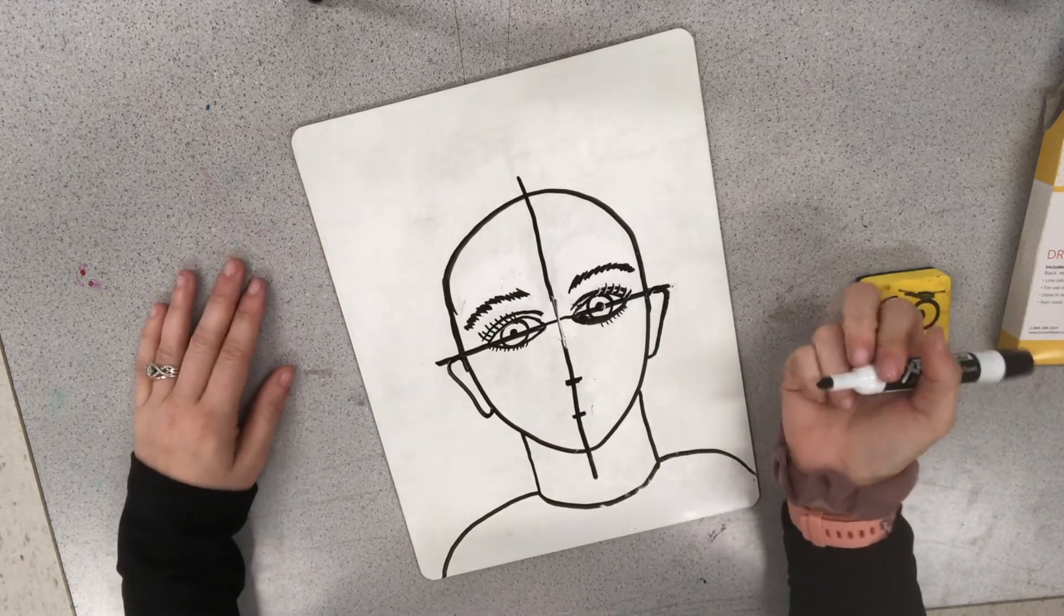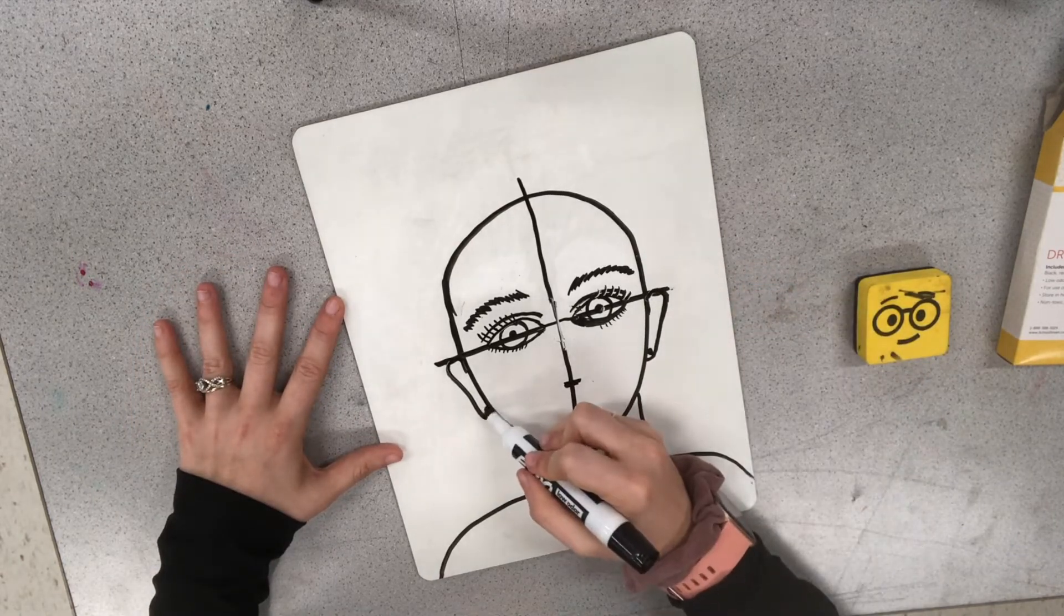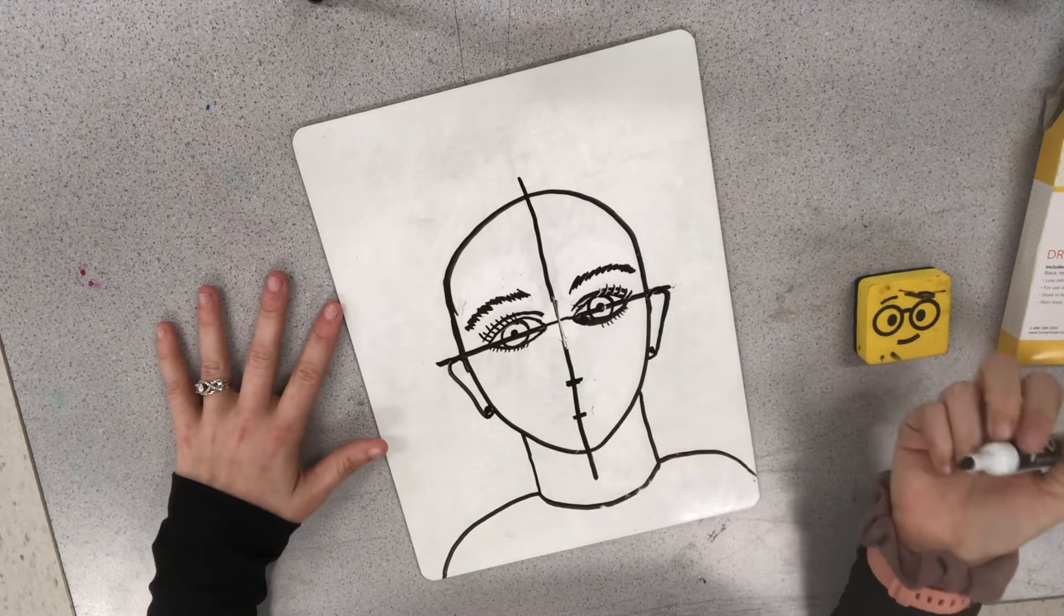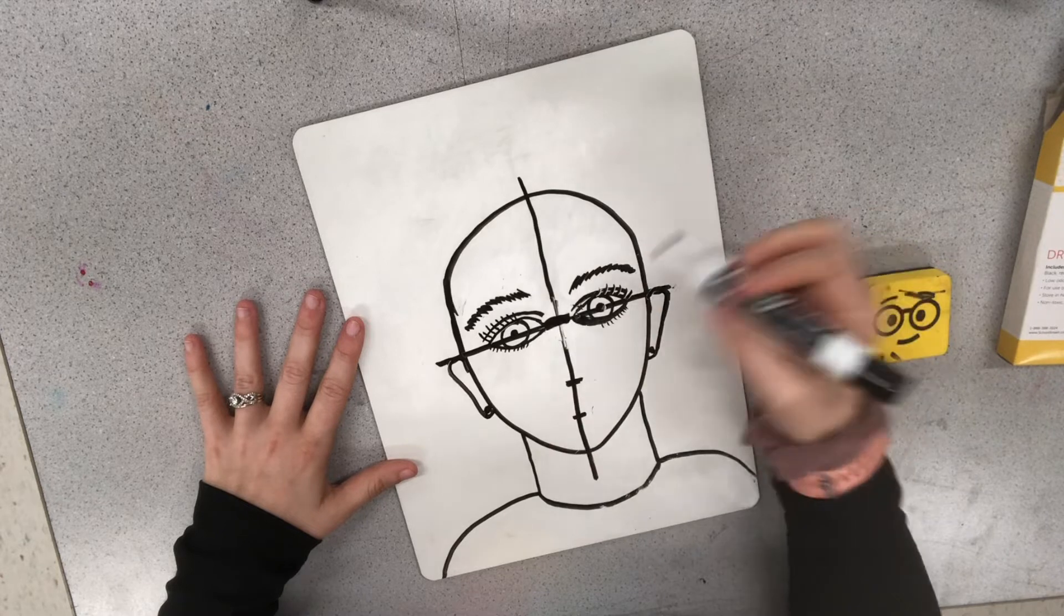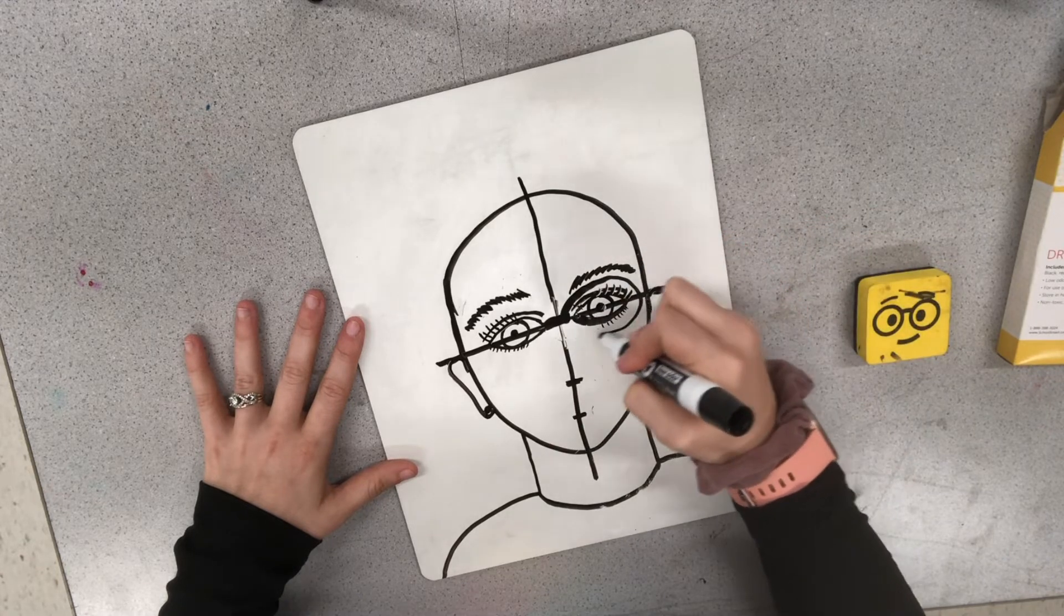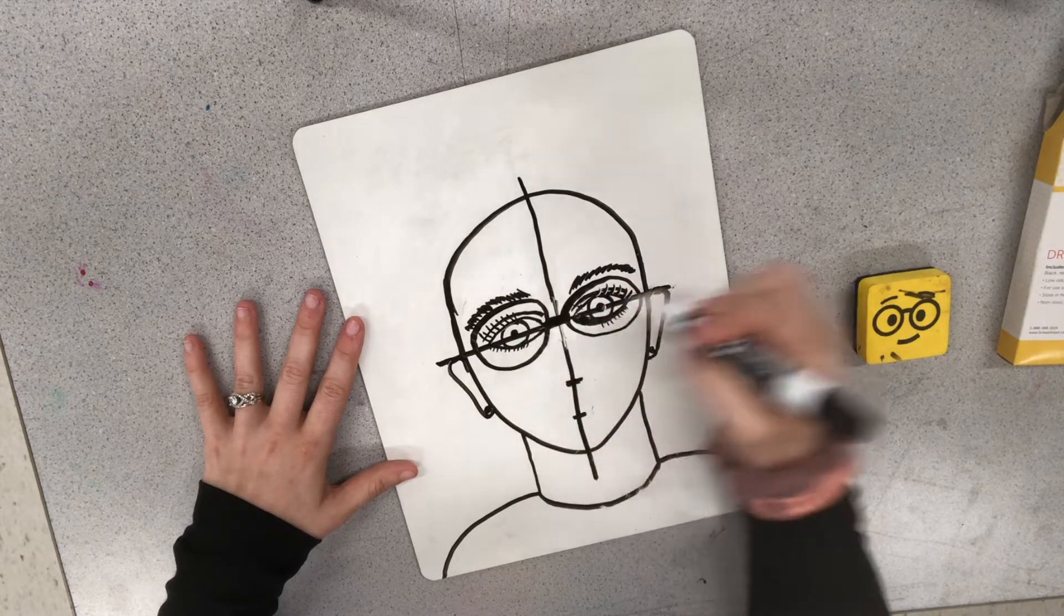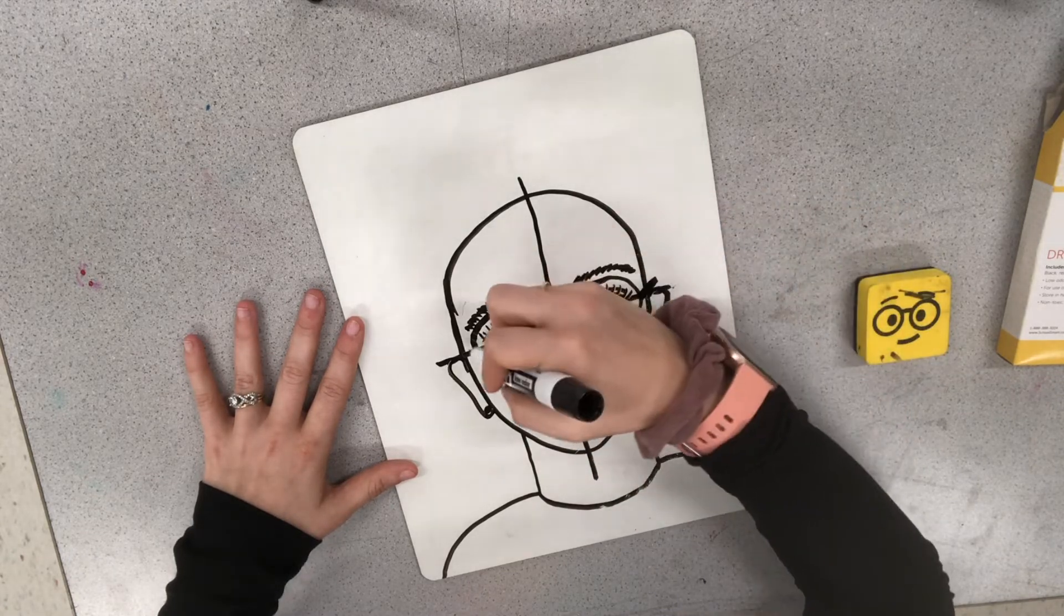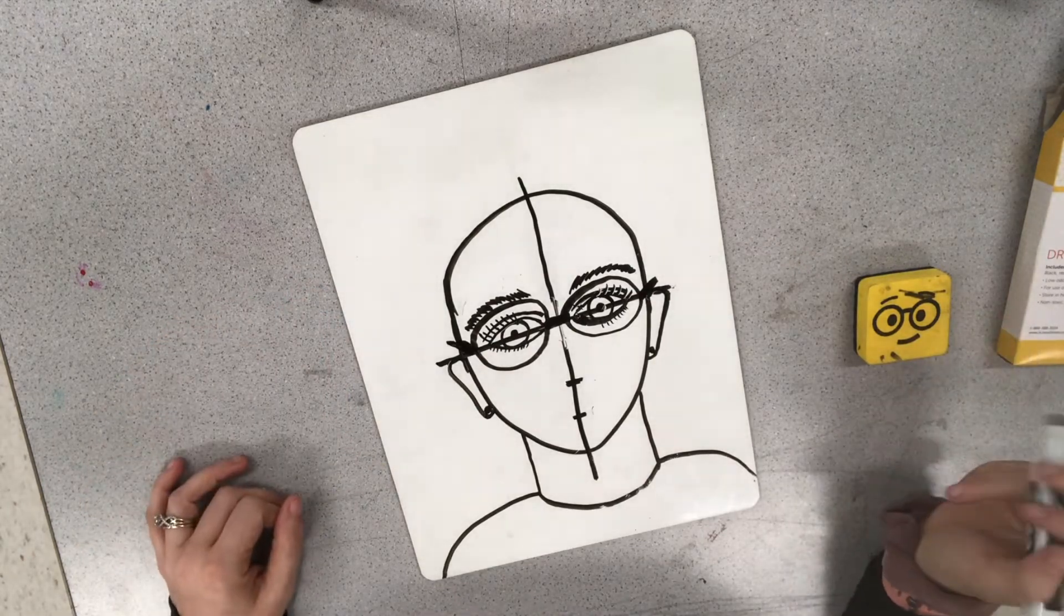Now some people have their ears pierced. So if your person has that, this is a place where you can add that in. And let me show you some glasses now that we have the ears. So we could do a line here. Maybe there's glasses. Some glasses are round. Some are more square or rectangle. And then we have them going over the ears here. So that's if your person has glasses.